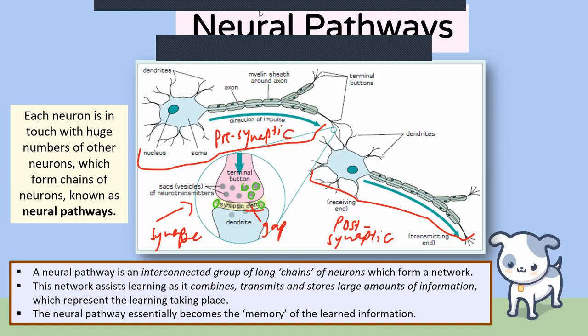A neural pathway is a chain of neurons — not just one pre-synaptic with a post-synaptic, but more and more neurons communicating with one another. Neuron A communicates with neuron B, which communicates with neuron C, then D, then E — a chain of connected, communicating neurons. That is what we call a neural pathway. Whenever we say we have a good memory of something, what we're really saying is we have a good neural pathway that represents that information.